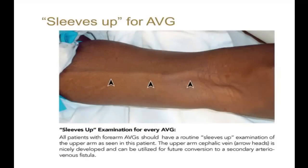Sleeves up for arteriovenous graft. This is a very important test for every patient who has an arteriovenous graft. Grafts do not tend to stay open forever, and especially in patients who have good upper arm vessels, it is necessary to check for the presence of dilated veins in the upper arm that can subsequently be used for an arteriovenous fistula creation. Every patient who has a forearm AV graft should have a routine sleeves-up examination of the upper arm. As seen in this patient, the upper arm cephalic vein has nicely developed, so in future when the AV graft fails, the upper arm cephalic vein can be utilized for conversion to an arteriovenous fistula.